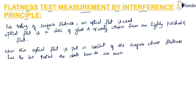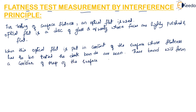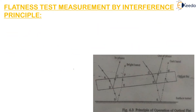These bands will form a contour map of the surface, which is similar to the contour of the land which is being tested. Here there is an optical flat which is slightly inclined to the surface which has to be tested.